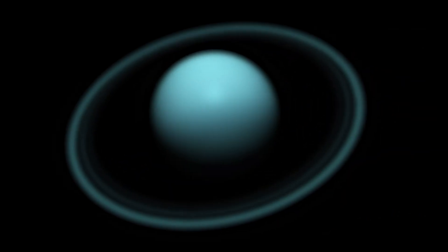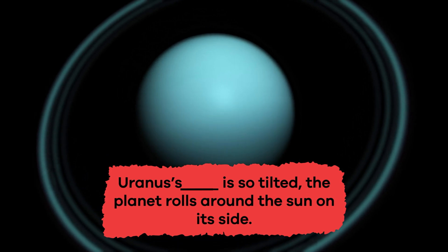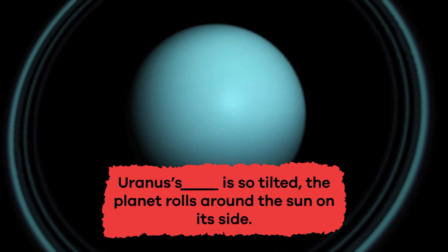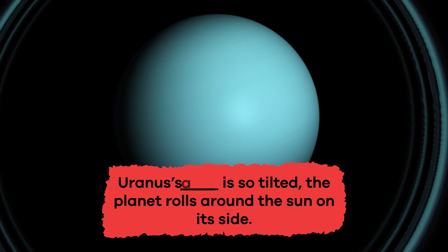Fill in the blank. Uranus' blank is so tilted, the planet rolls around the Sun on its side. Axis.